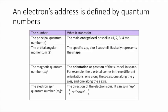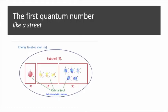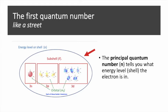The first quantum number, we call this N or the principal quantum number. It's like a street. It tells you what the energy level, what the shell is that the electron is in.